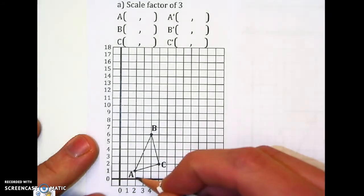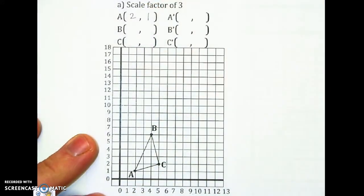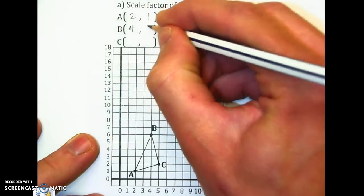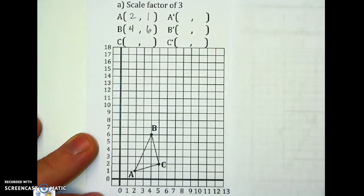So I'm going to take A, 2, 1. B, 4, 6. And C, 5, 2.